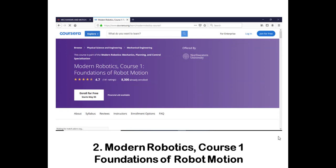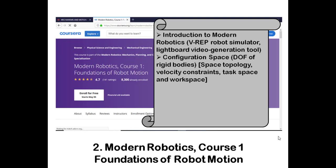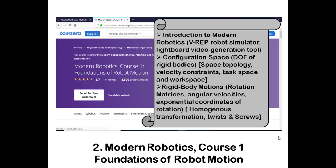The second course is Modern Robotics: Foundations for Robotic Motion. This is not related to software, but as a mechanical engineer, the future of industries is going to be heavily tied to robotics. This course covers modern robotics topics like robot simulator, configuration of robots in space, degrees of freedom for rigid bodies, space topologies, velocity constraints, task space and workspace, rigid body motions, rotation matrices, angular velocities, exponential coordinates, homogeneous transformation, and screws.